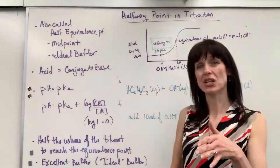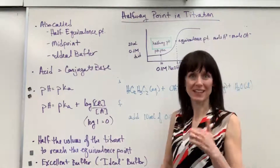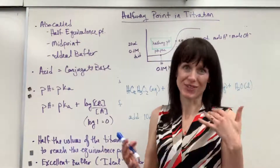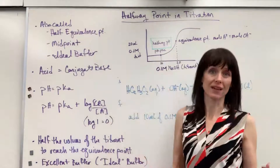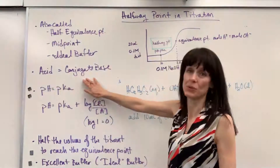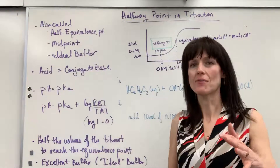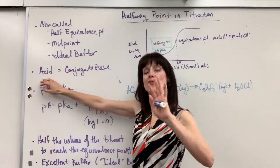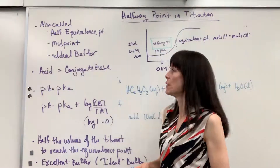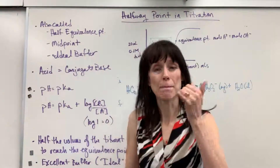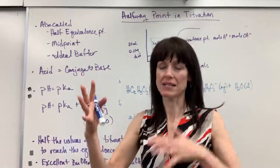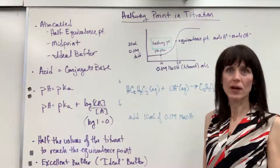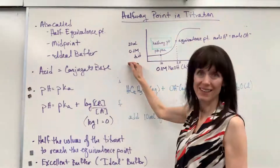The halfway point is really special. The pH at the halfway point equals the pKa, and I'll show you why. What's so significant about the halfway point is that the acid equals the conjugate base. You can look at it in terms of moles of acid equal moles of conjugate base, or concentration of acid equals concentration of conjugate base. The acid and its conjugate base form the buffer pair. When those are equal, you're right at that halfway point where we've delivered half the mils of the titrant to the analyte.